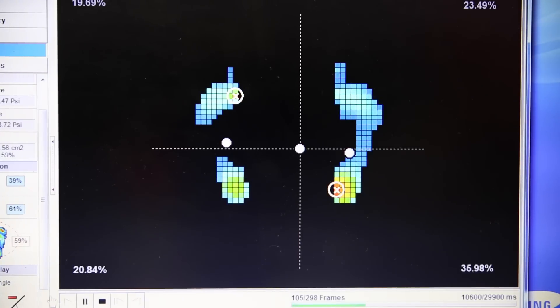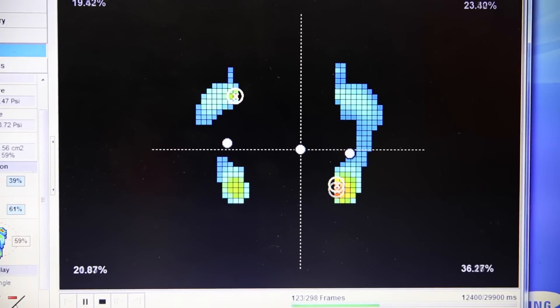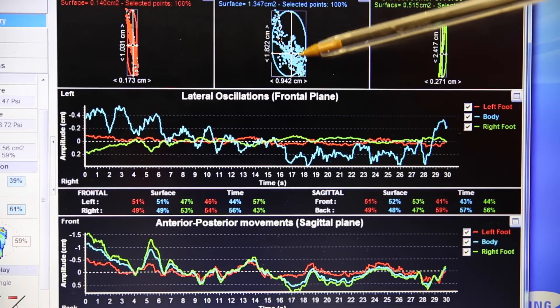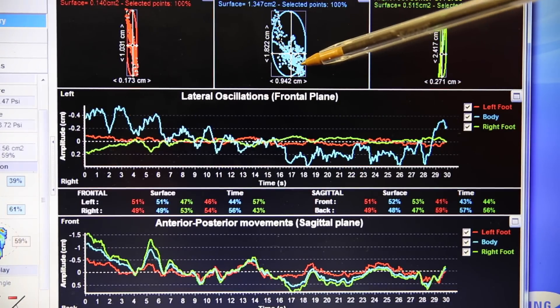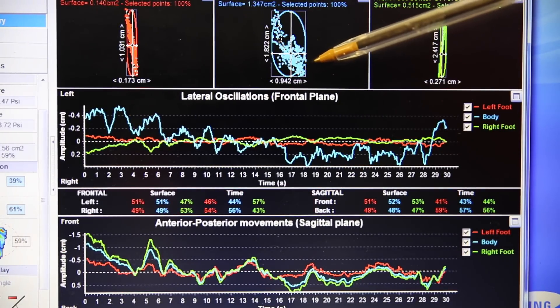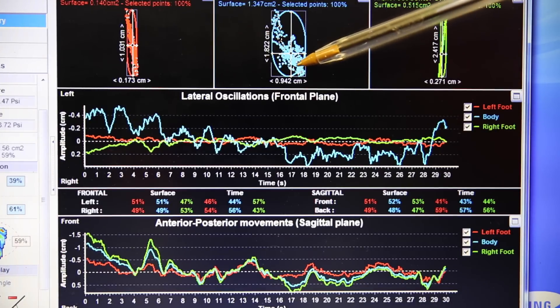If we just go on to the stabilometry side here, we can see that from the long right side, the center of pressure—or I like saying directly the center of mass—is drifting from right heel to left forefoot.